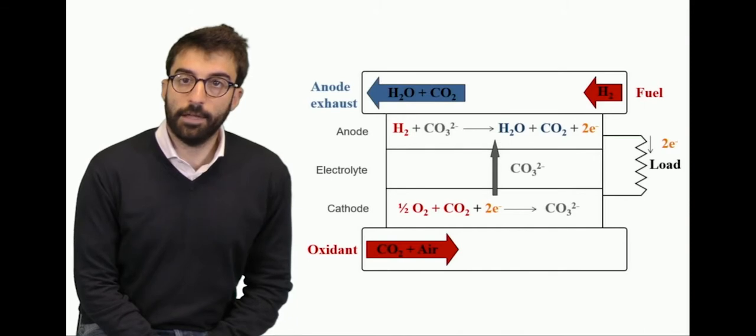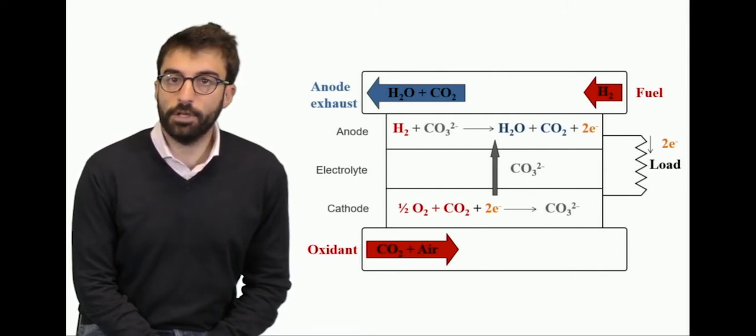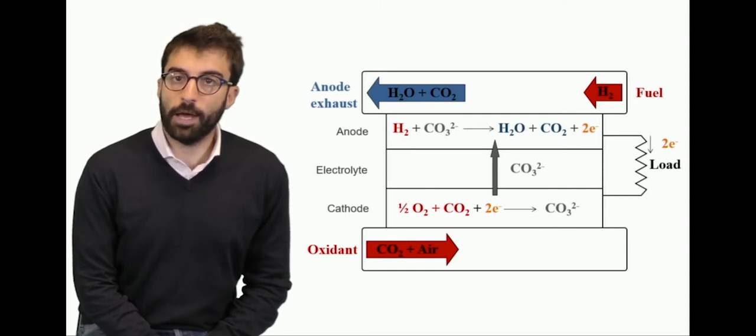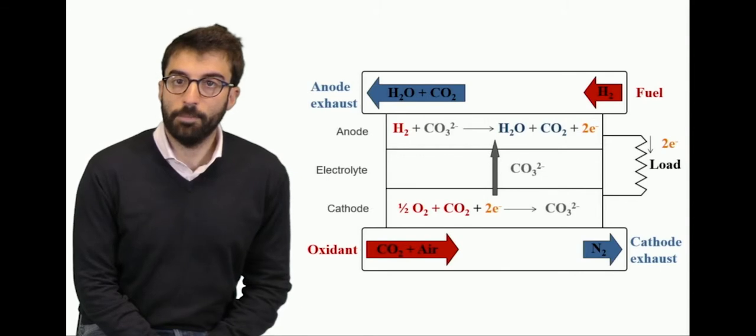Looking to the off gases, at the anode we have steam and carbon dioxide, plus a small amount of hydrogen, because like in all fuel cell technology, usually not all the hydrogen supplied is consumed. At the same way, we may have a similar process at the oxygen electrode, at the cathode, where in the exhaust we theoretically might have only nitrogen, but usually we also have an amount of carbon dioxide and oxygen that does not react.